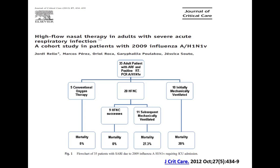A 2009 study in H1N1 found that patients managed on conventional oxygen therapy had zero percent mortality — they were the least sick. About 20 patients were put on high flow nasal cannula; nine succeeded with 5 percent mortality. The 11 who did not succeed had to be intubated, with a mortality rate of 27 percent — numerically more than those initially mechanically ventilated at around 20 percent. This mirrors non-invasive ventilation data: patients who respond have the least mortality, but those who then need intubation often have higher mortality than those directly intubated.